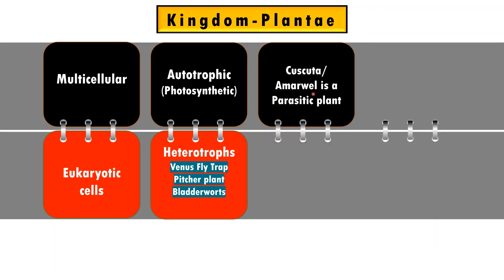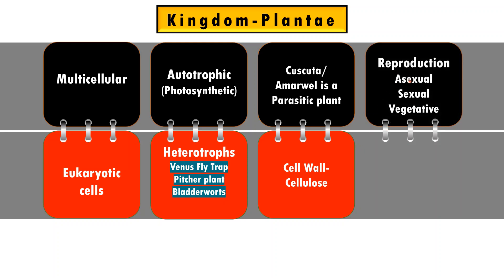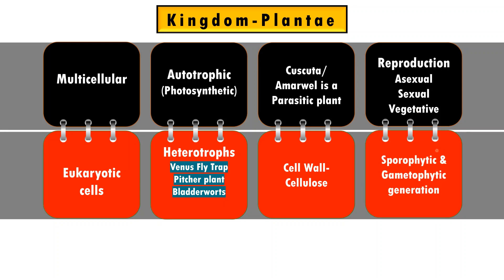They also have a parasitic mode of nutrition. The example is Cuscuta, which is also called Amarbel. Their cell wall is made up of cellulose. They show all three types of reproduction, that is asexual, vegetative, and sexual. Their life cycle shows distinct life phases such as sporophytic generation and gametophytic generation.